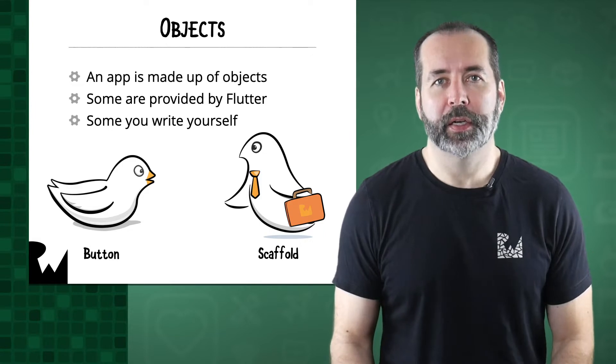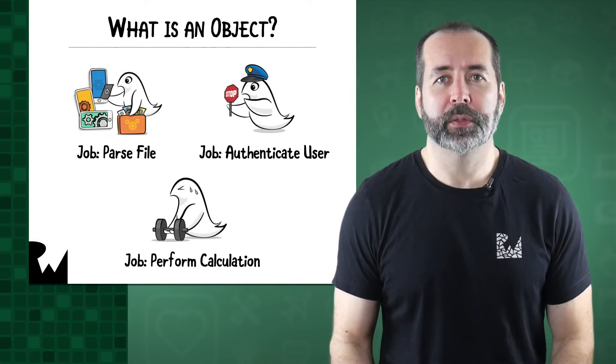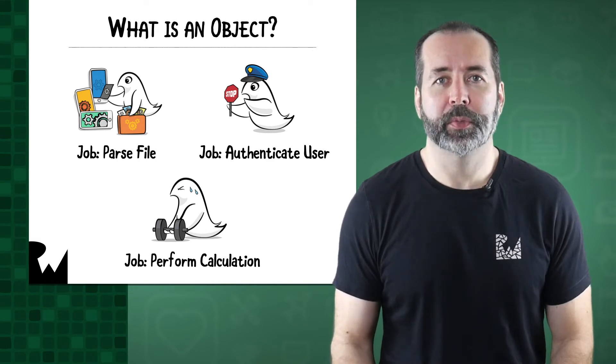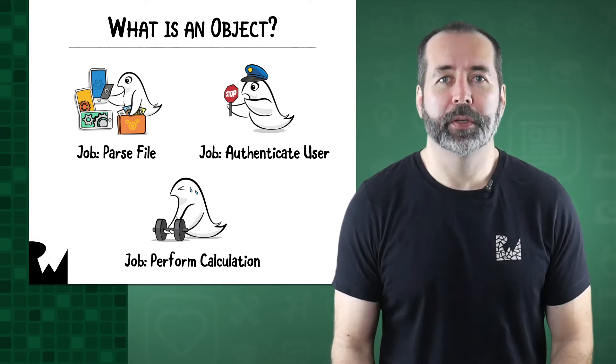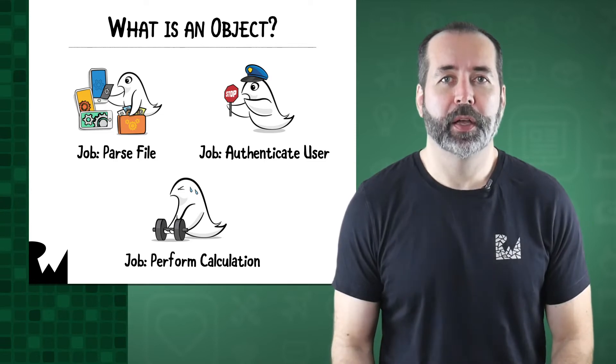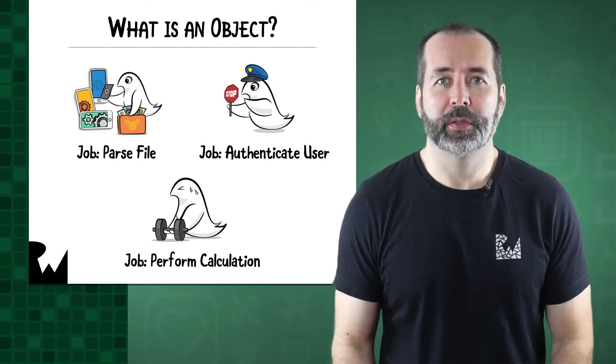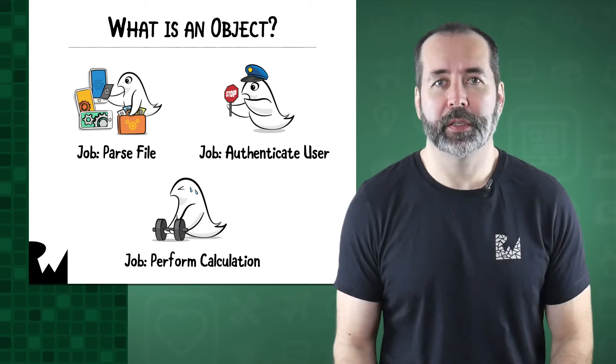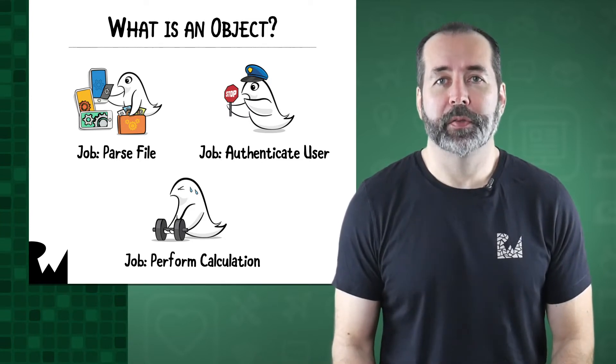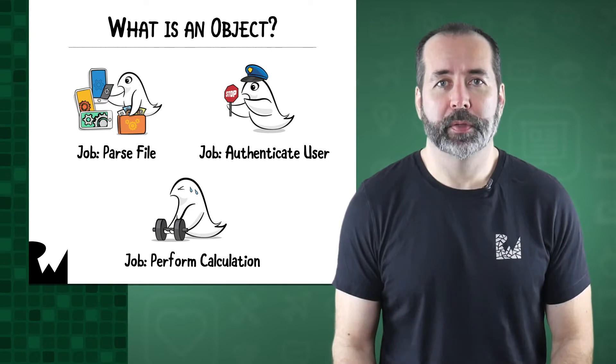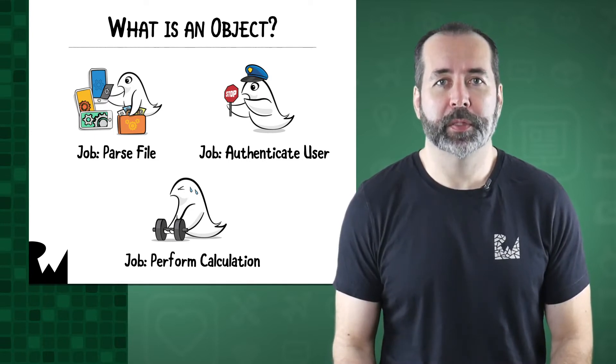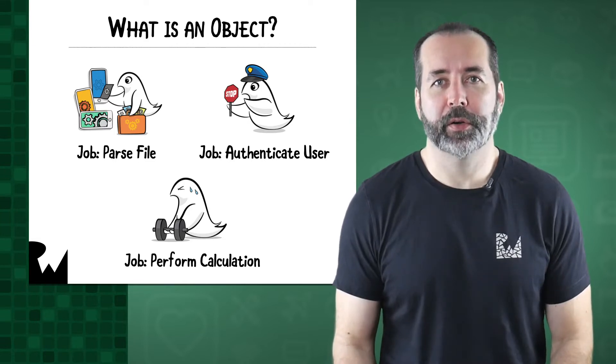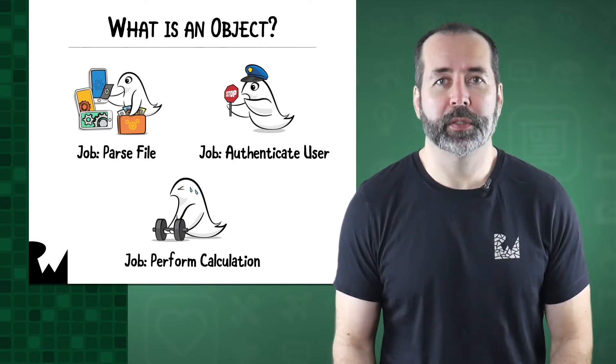But what is an object exactly? Programmers like to group related functionality into objects, each of which has a particular job. For example, you might have an object whose job is to parse a file, another whose job is to authenticate the user, and another one whose job is to perform a difficult calculation. Each object takes care of a specific part of the program. In a full-blown app, you'll have many different types of objects – tens or even hundreds. Even your small starter app already contains several different objects.